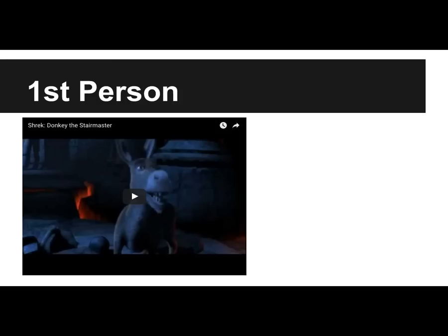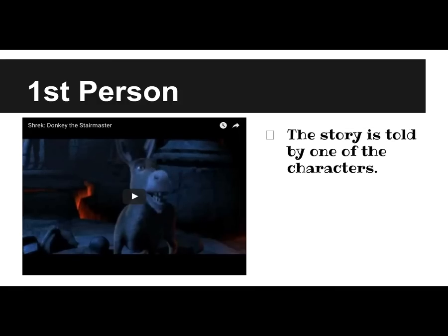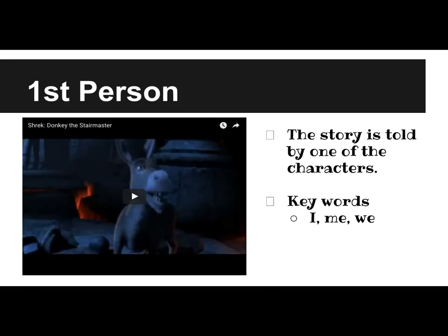First, let's talk about first person point of view. This is when the story is told by one of the characters. Some key words you can look for are I, me, or we. Now be careful when you're doing this, because that I, me, and we have to be outside of quotations. In any story a character can say I when they're talking about themselves, but here we're looking for I, me, and we outside of the dialogue.